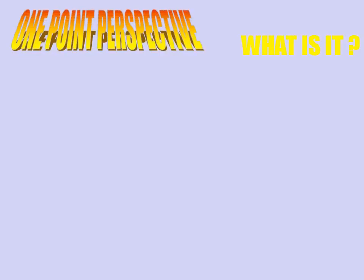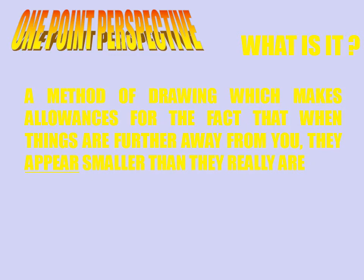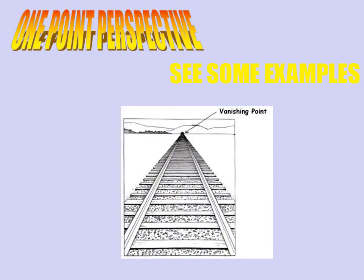So let's start with what is it. One point perspective is a method of drawing which makes allowances for the fact that when things are further away from you, they appear smaller than they really are. Here we have a set of train tracks where, when it's closest to you, the tracks are quite wide apart. But as they get further and further into the distance, to this point called the vanishing point, it looks as if the rails are getting closer and closer together. We know that couldn't happen because the train would fall off the track — the train lines always stay the same distance apart. Here we've got the horizon line where the vanishing point is, and everything in one point perspective goes to that vanishing point, so it looks like everything is getting smaller as it goes into the distance.